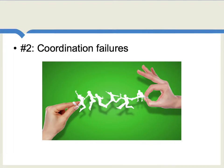A second argument for industrial policy has to do with what are sometimes called coordination failures. Going back to our example of the automobile industry, it could be that to have a successful automobile industry, your country also needs an auto parts industry and an extensive rail network to ship the parts from where they are made to the automobile production plants. But possibly no single private sector individual will move first and build his part of the network because he sees that the other individuals are not investing. So there's at least potentially a role for the government to have a kind of big push forward and get everyone on board with the idea that a particular sector is going to grow, and thus help overcome these potential coordination failures.